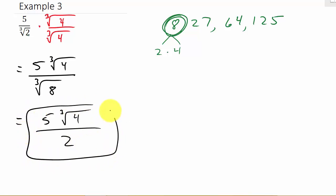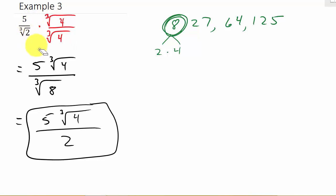That got rid of the radical. A lot of students make the mistake of just multiplying by whatever number's under the radical. That only works with square roots — it doesn't work with cube roots and fourth roots.